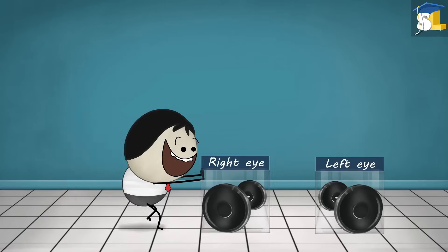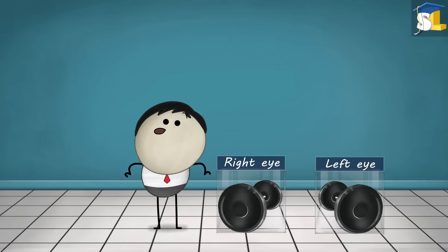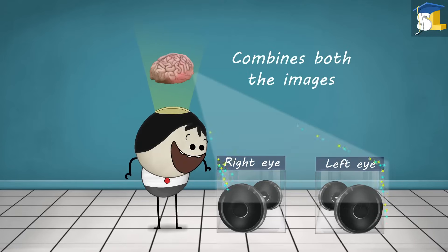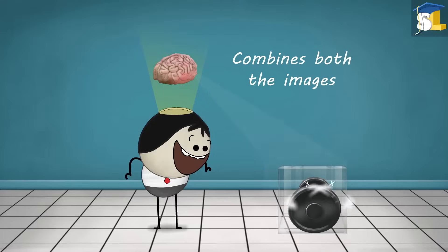Our eyes send these two slightly different images to the brain. The brain blends or combines both images to make a three-dimensional image of the object.